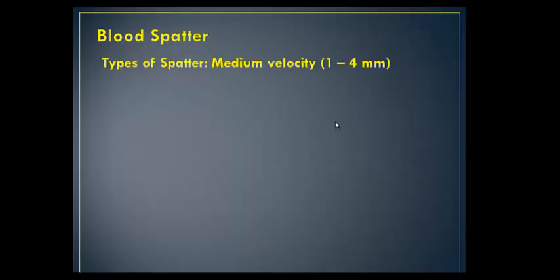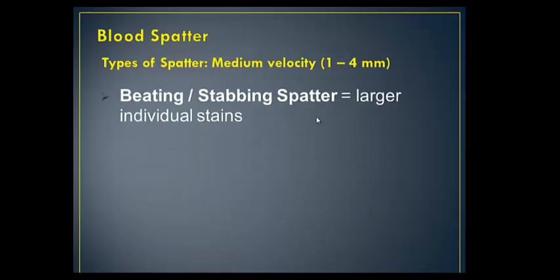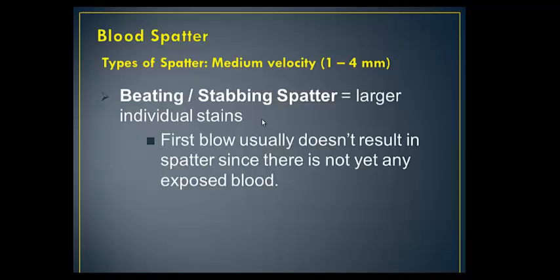So that was high velocity. Now this is medium velocity — anything one to four millimeters. This would be associated with any kind of beating or stabbing. These are larger individual stains, and there will also be some smaller satellite stains around them.